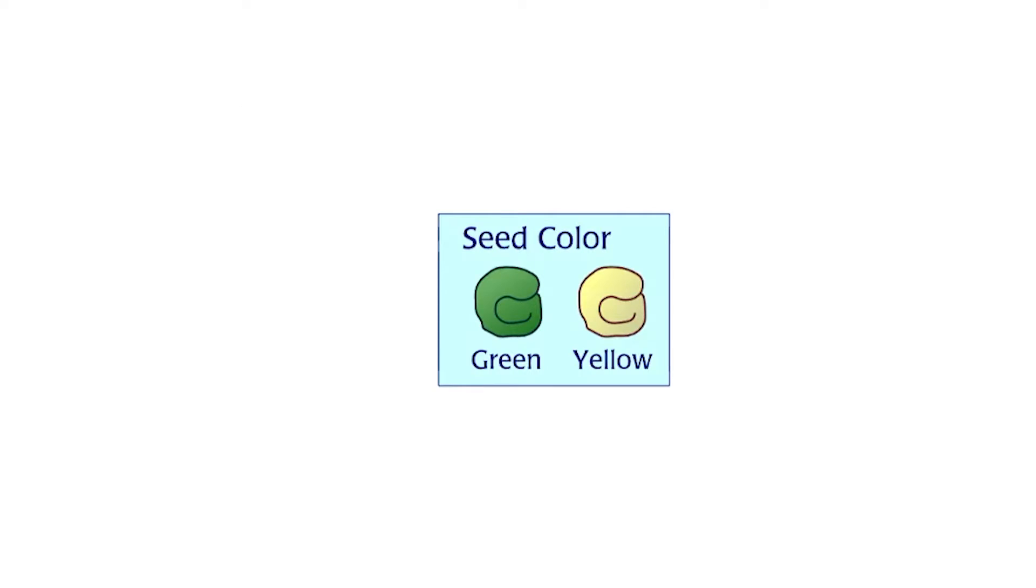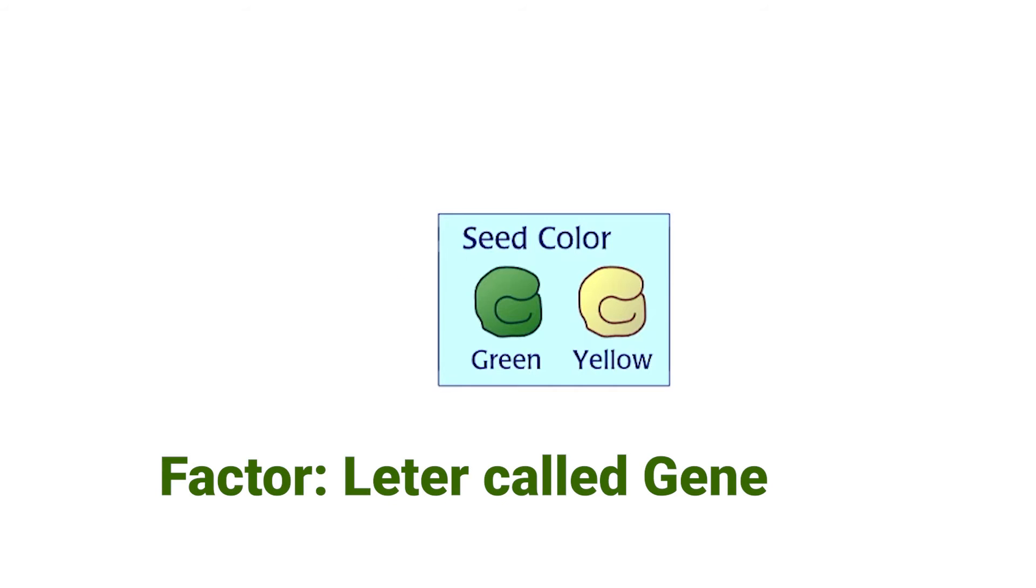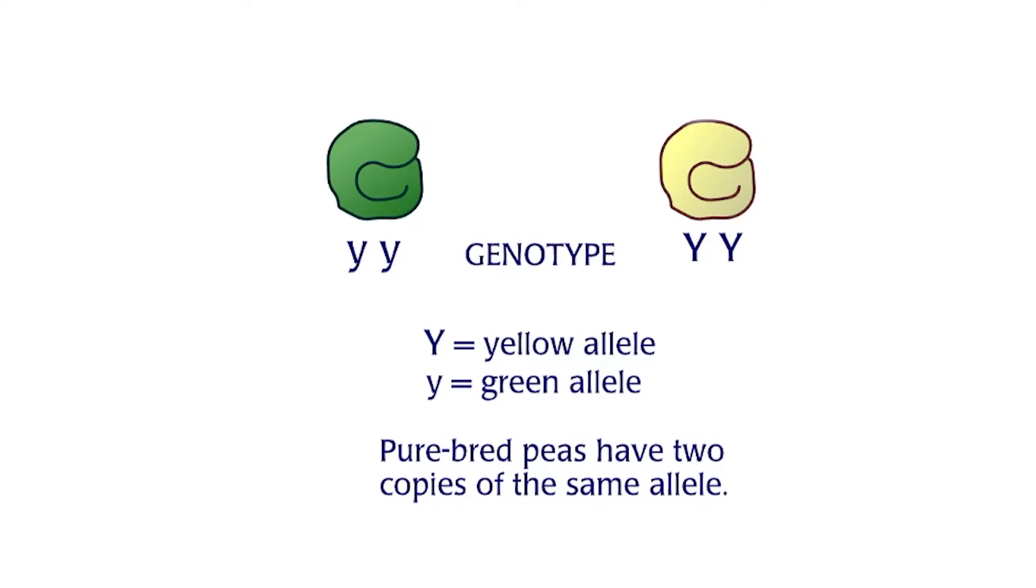Mendel reasoned that a trait like seed color is controlled by one factor, later called a gene, which has a green form and a yellow form. Each form is called an allele, and a pair of alleles are called a genotype.